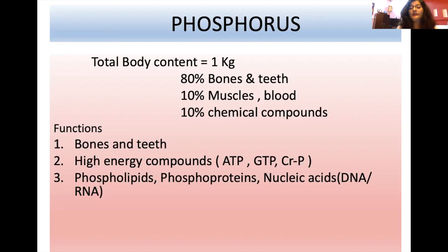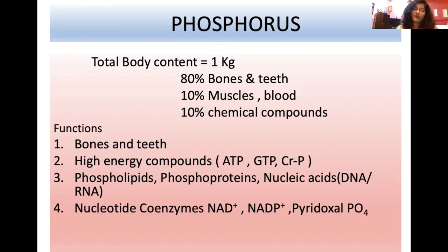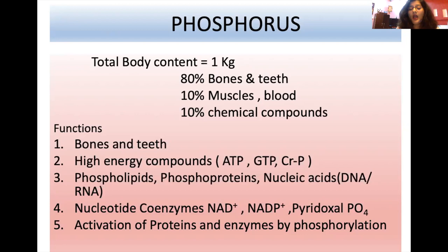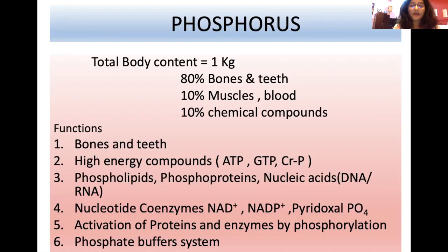Phosphorus also acts as part of nucleotide coenzymes like NAD, NADP, and pyridoxal phosphate. It helps in activation of proteins and enzymes through phosphorylation. The phosphate buffer is an important intracellular buffer, helping maintain acid-base balance. Formation of phosphate esters like glucose-6-phosphate, phospholipids, and phosphoproteins are also important functions of phosphorus.